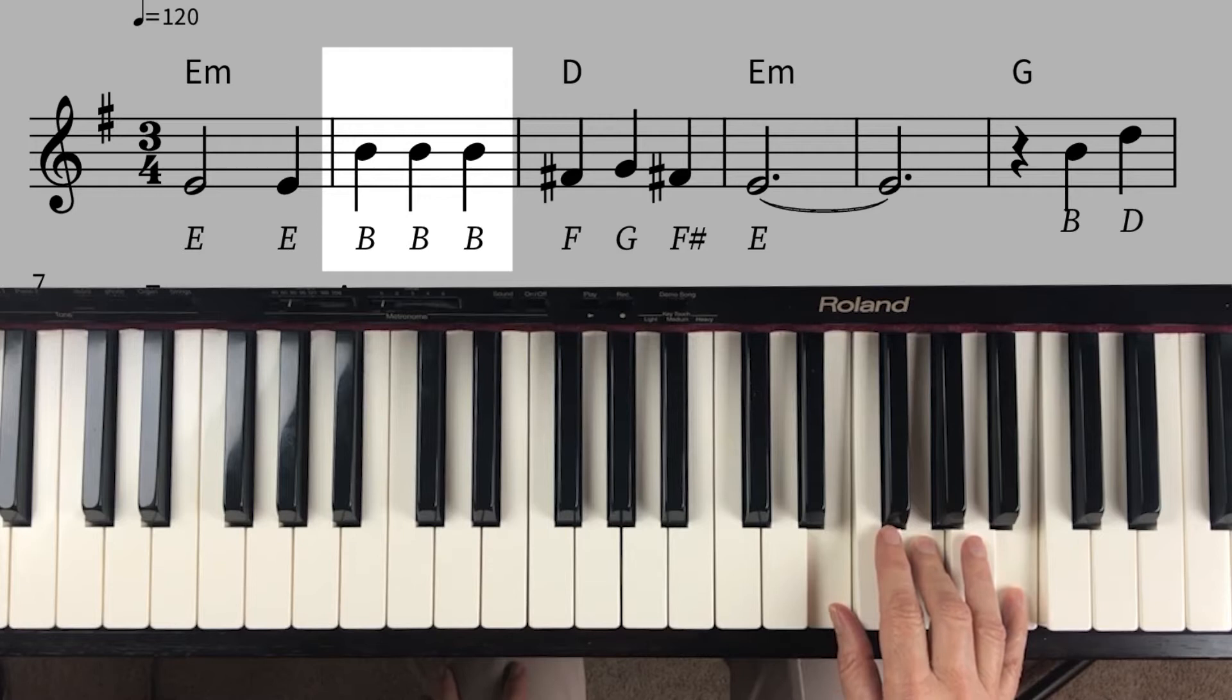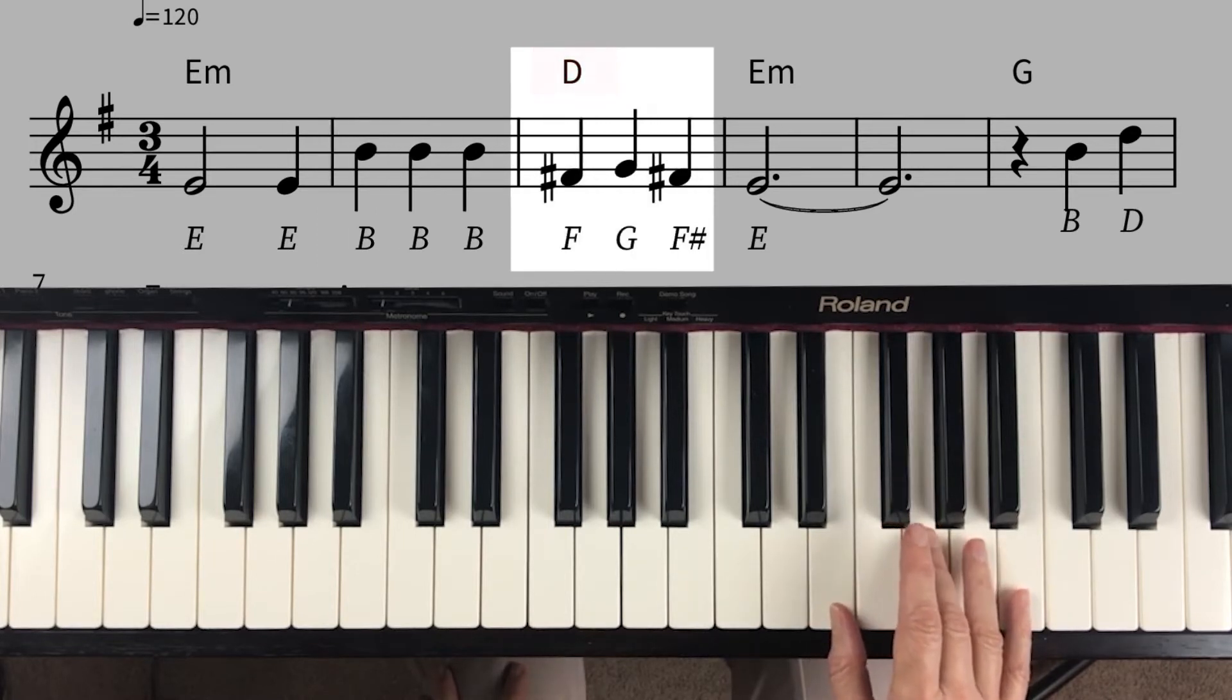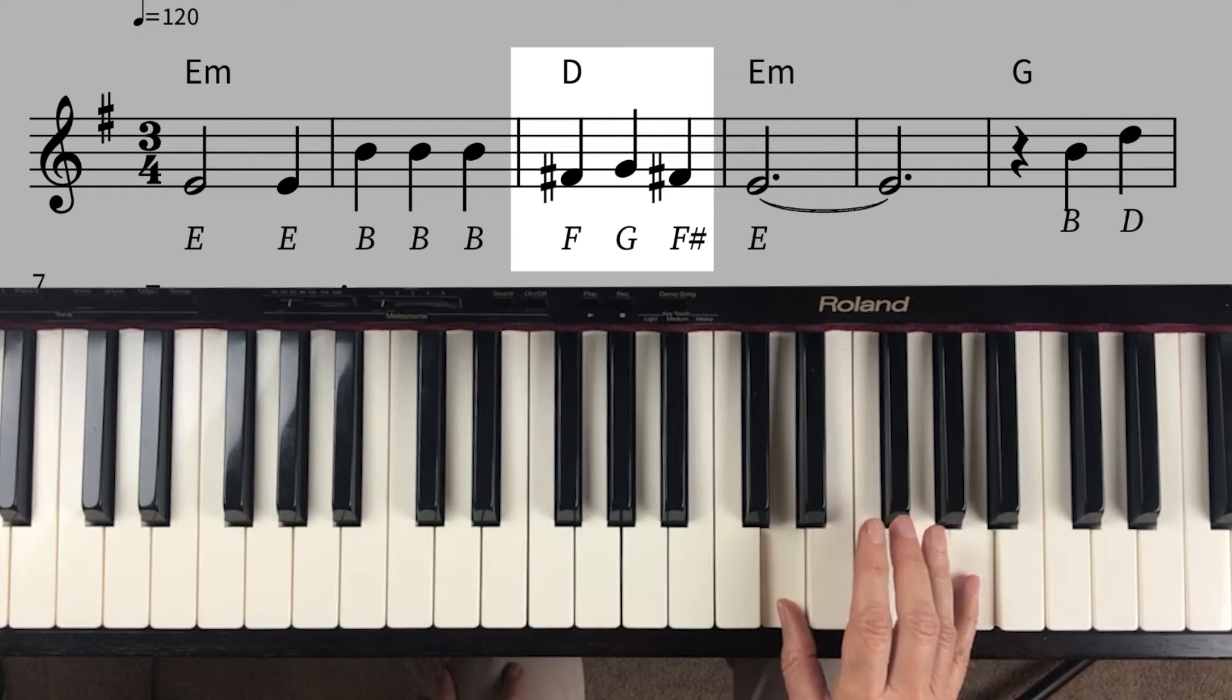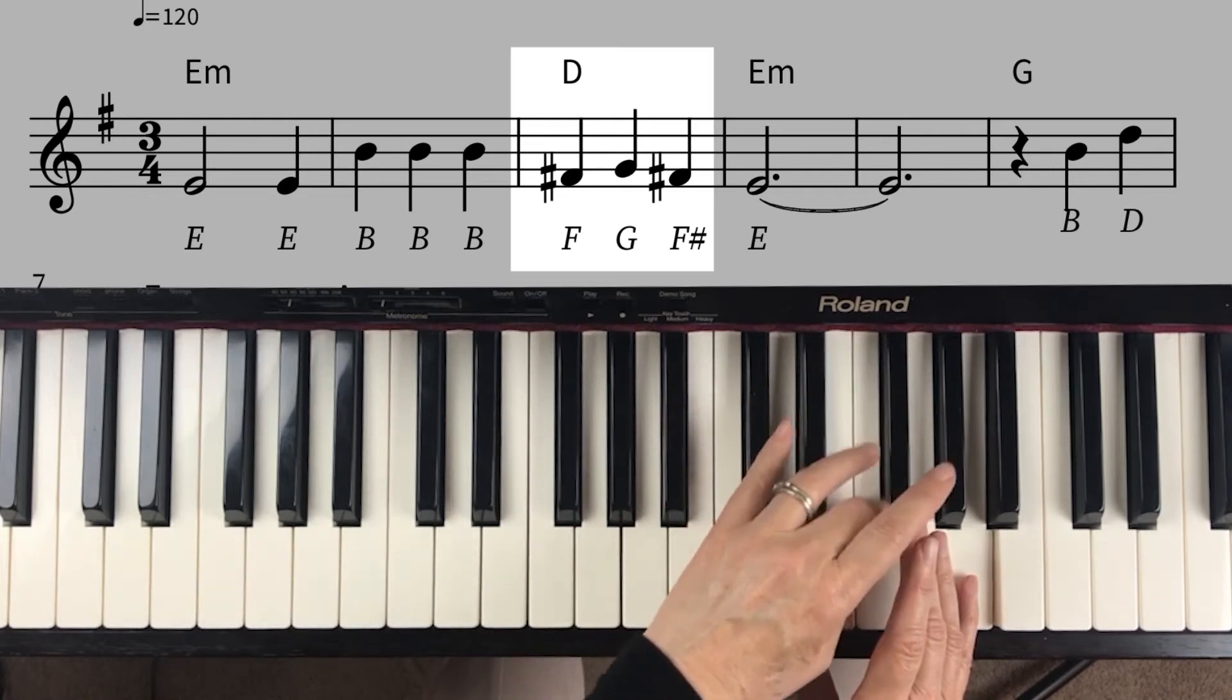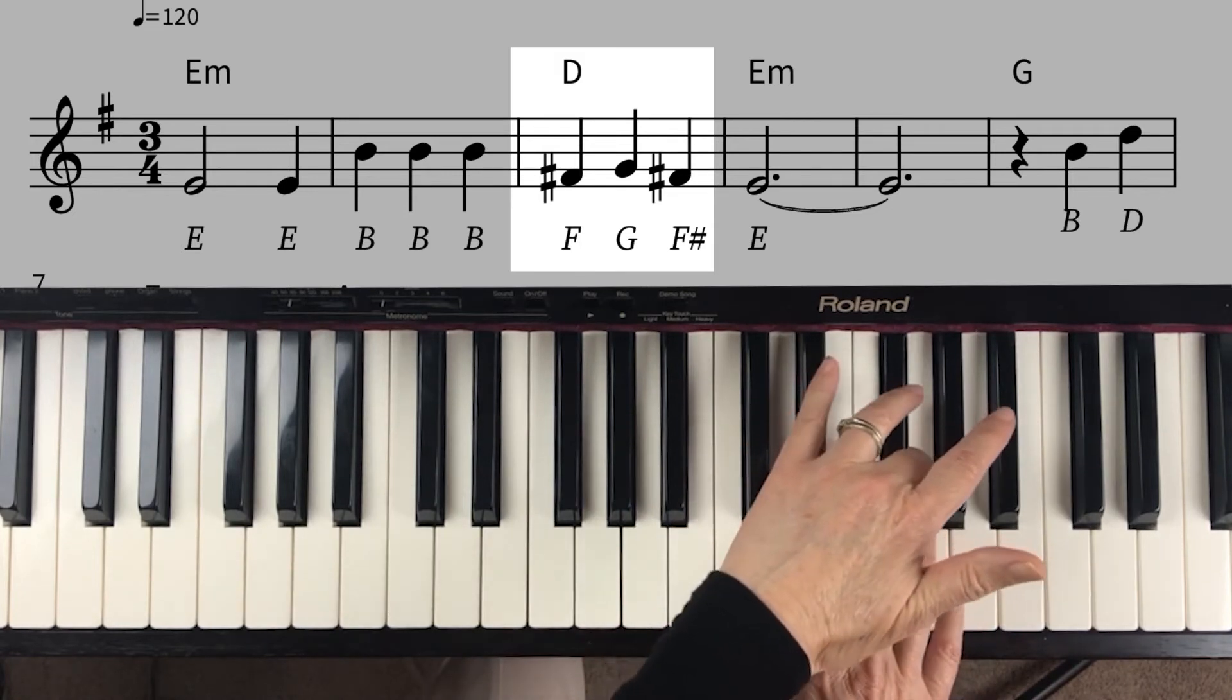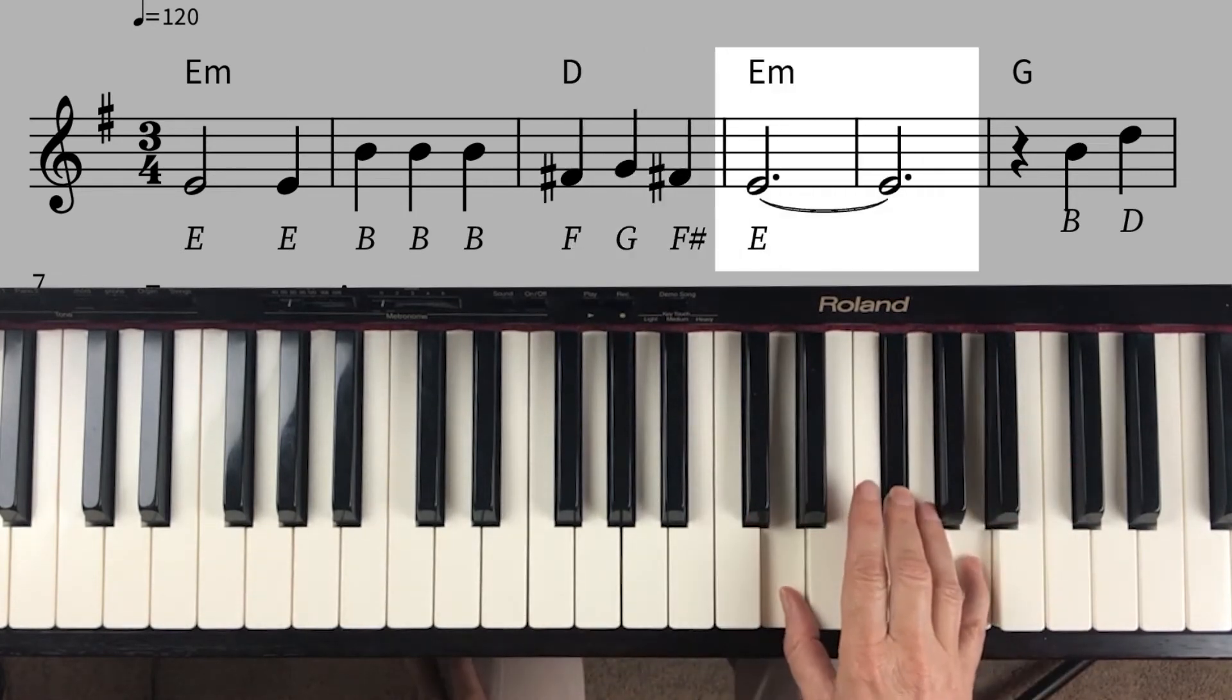And then the next chord we need to learn is D. So we just take our thumb down one key and move our hand kind of like a claw. The thing with D, it's a major chord. We put our thumb on D, and major chords are just the opposite. You skip three keys on the bottom. So we count up four: one, two, three, four. And you skip two on the top, so we count up one, two, three, and that leaves us with a D major chord.